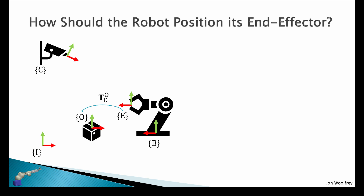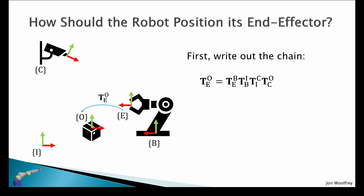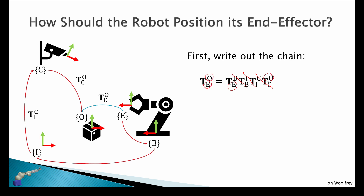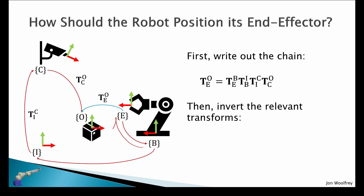So we return to how should the robot position its end effector? First, we write out our chain of transforms. End effector to object is given by: end effector to base, base to inertial frame, inertial frame to camera, and camera to object. The intermediate frames match up and cancel out, leaving us with end effector to object. Then we just need to invert the relevant transforms. End effector to base is the inverse of base to end effector, and the same for inertial to base — we take the inverse of inertial to base to get base to inertial.